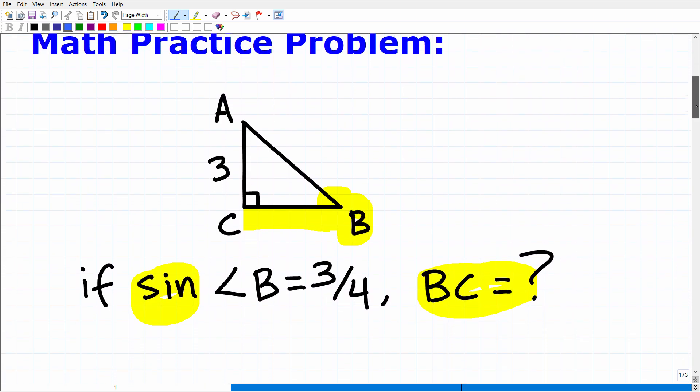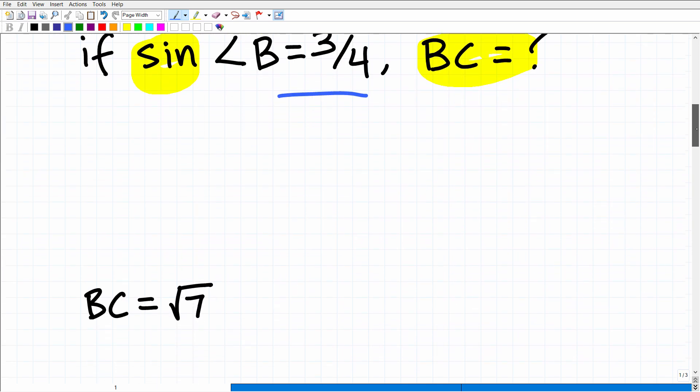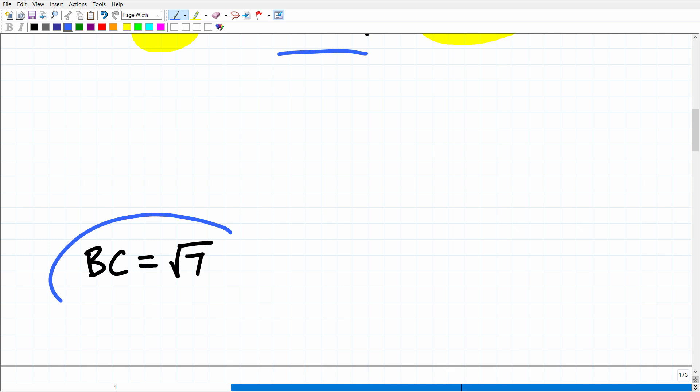All right, so let's go ahead and get into this problem right here. So again, we have a right triangle, and that is an important detail. And we're being told the sine of angle B, this right here, is equal to 3 fourths, and we're looking for this length, BC. Okay, so let's go take a look at the answer. The answer is the square root of 7.